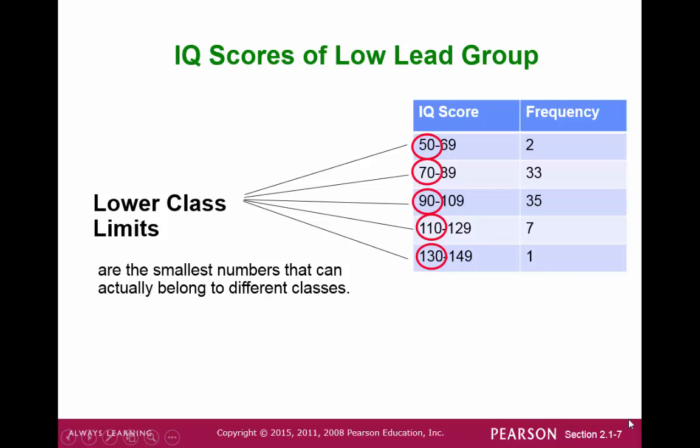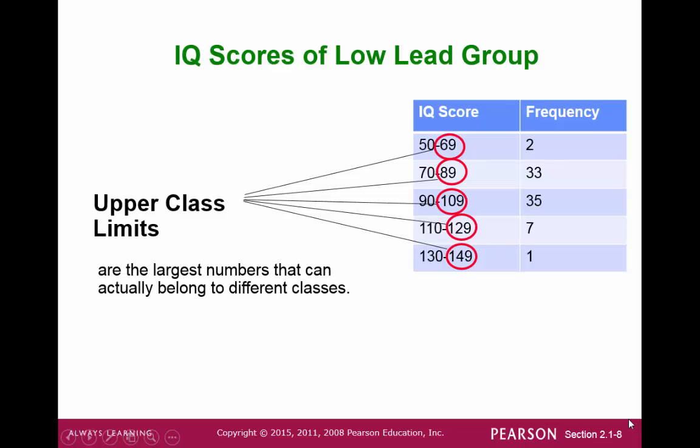Some definitions: a lower class limit is the smallest number that can go to a particular class. An upper class limit would be the largest number that can go into a particular class.